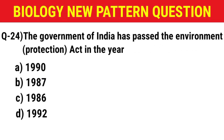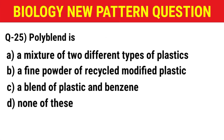Next question: The Government of India passed the Environment Protection Act in the year — (A) 1990, (B) 1987, (C) 1986, (D) 1992. The correct answer is option C: 1986.